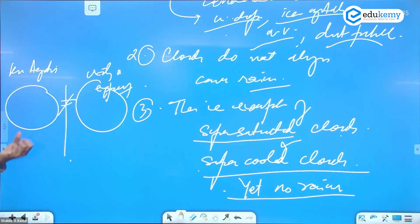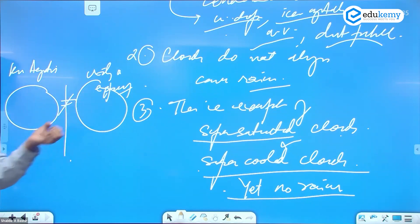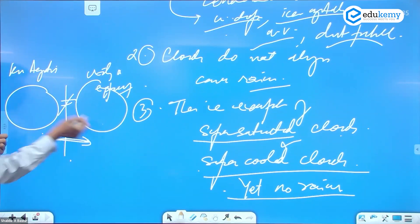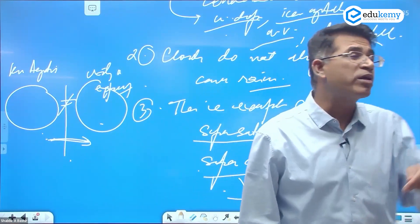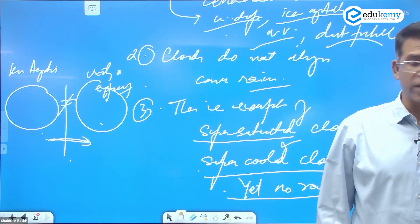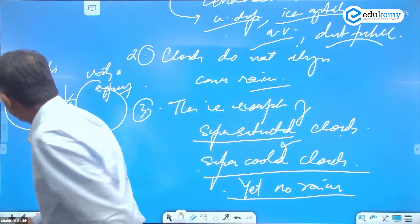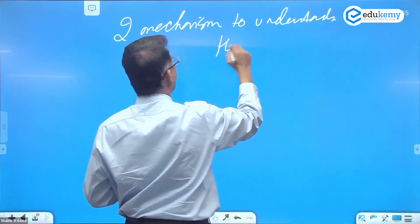A cloud has moisture, water droplets, and ice crystals, but clouds don't cause rain by themselves. There is something that will force a cloud to cause rain. So there are examples where clouds may be super-saturated or super-cooled, yet there is no rainfall.